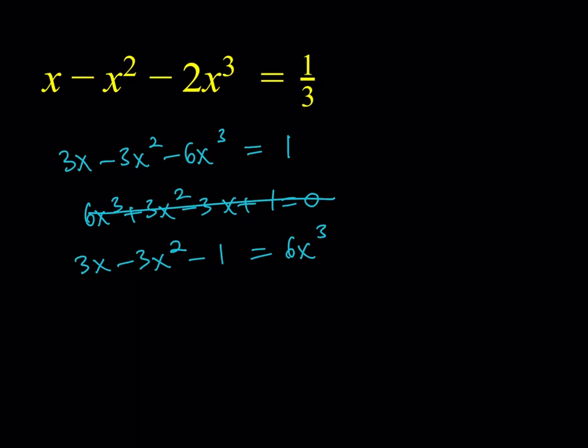What am I going to do next? Next, I'd like to write this in standard form. So from largest power to smallest, that's going to look like negative 3x squared plus 3x minus 1 is equal to 6x cubed.